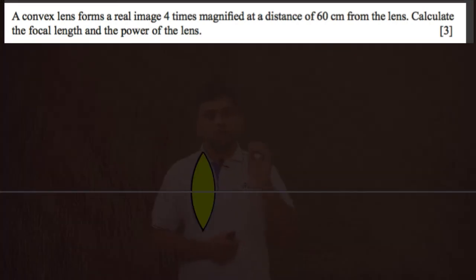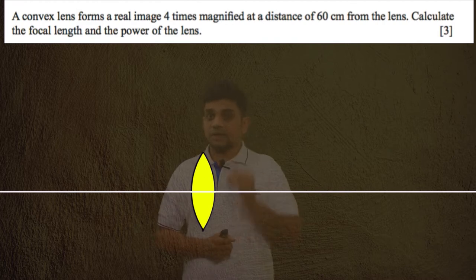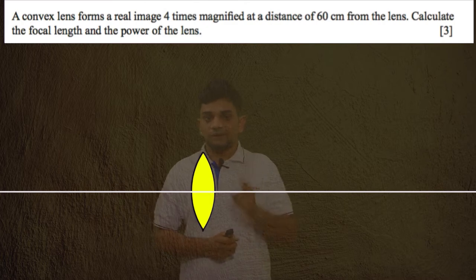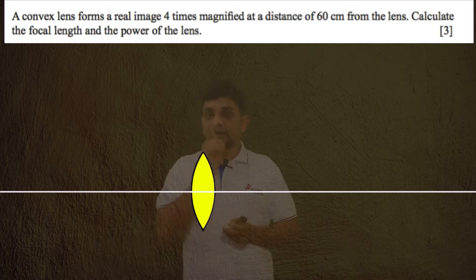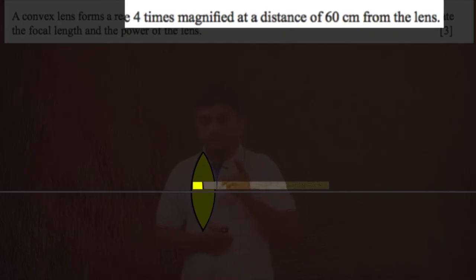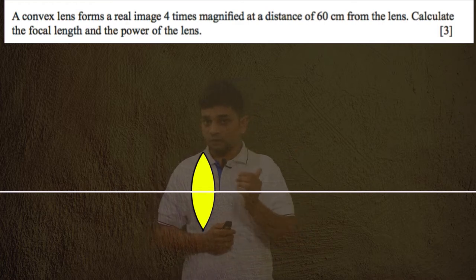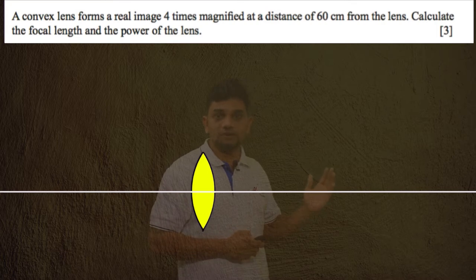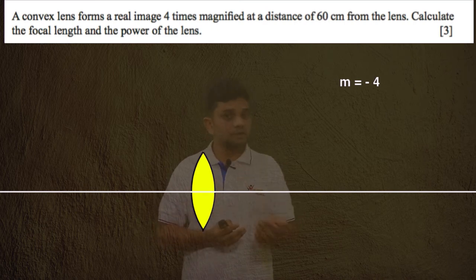The question says the convex lens forms a real image. For a real image, magnification is negative. The magnification is four times, and since it is a real image, magnification is minus 4. The image is formed at 60 centimeters from the lens. The position of the real image is always on the right side — this is the position of the real image, which is an inverted image.